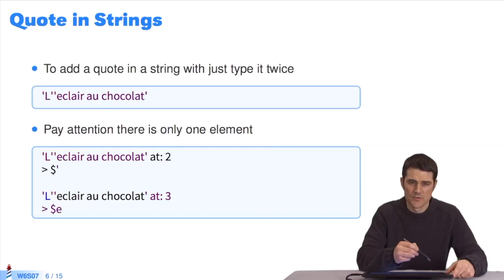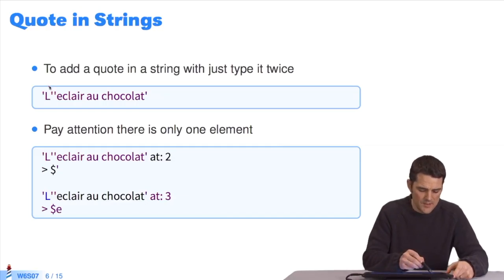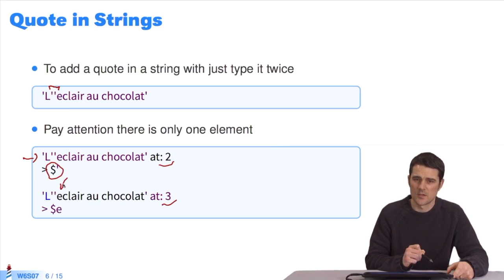One small subtlety. Since strings of characters are delimited by single quotes, if I want to put a quote in a string, the trick is to use two quotes side by side. This means I want to insert one quote into my string of characters. But be careful, the subtlety is that it counts as only one element in the string. For example, Eclair au Chocolat at 2 means I want element 2 of this collection, and it sends back the quote character. And if I ask for at 3, I get the e that is here. So even if I enter two single quotes, they count as 1.